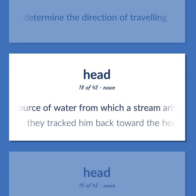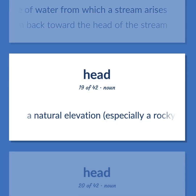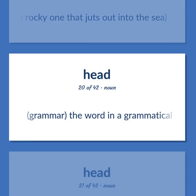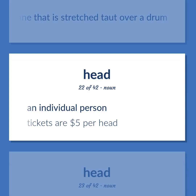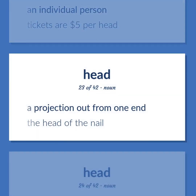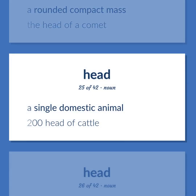The source of water from which a stream arises. They tracked him back toward the head of the stream. A natural elevation, especially a rocky one that jets out into the sea. Grammar: the word in a grammatical constituent that plays the same grammatical role as the whole constituent. A membrane that is stretched taut over a drum. An individual person. Tickets are $5 per head. A projection out from one end. The head of the nail. A rounded compact mass. The head of a comet. A single domestic animal. 200 head of cattle.